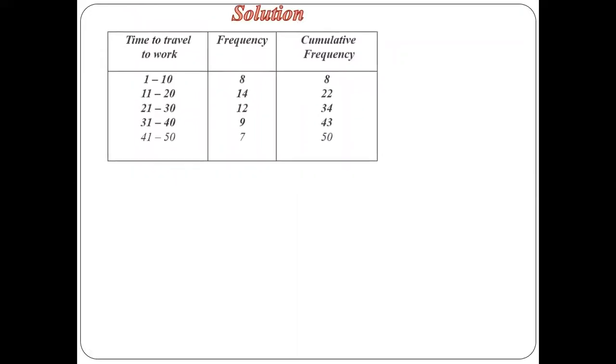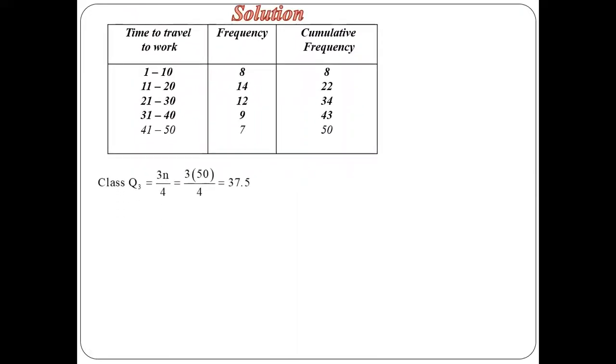Upper quartile here is three-quarter way, so we take 3n/4, which will give us 37.5. Here we are looking at the cumulative frequency equal to at least 3n/4, and this 3n/4 gives us 37.5. So this cumulative frequency will be 43, which will give us the fourth class, which is 31 to 40. So that will be our class that we are going to be working on.